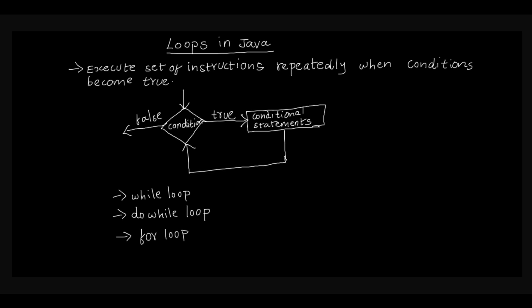The main thing is if the condition is true, it can be executed every time. In Java, there are three categories of looping: one is for loop, another is while loop, and another is do-while loop.